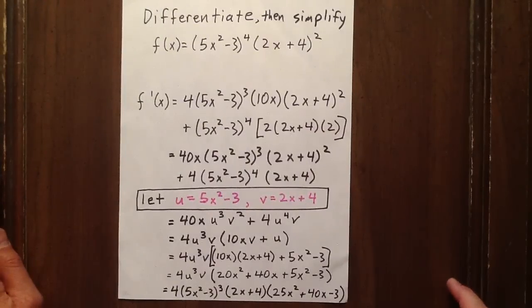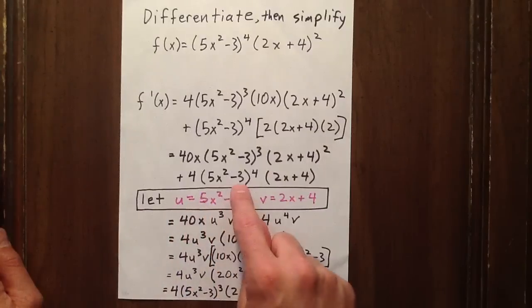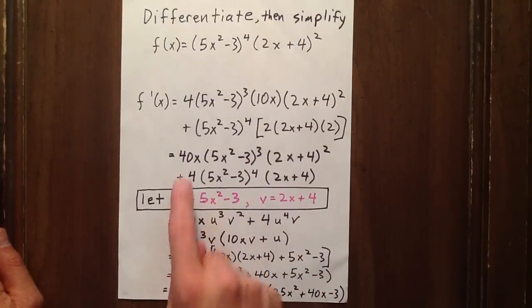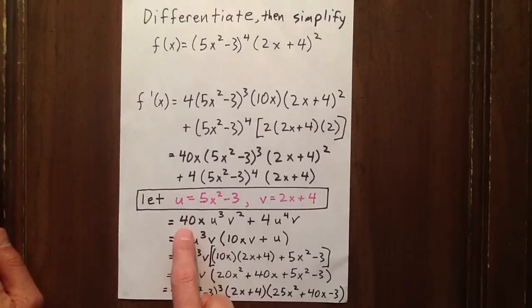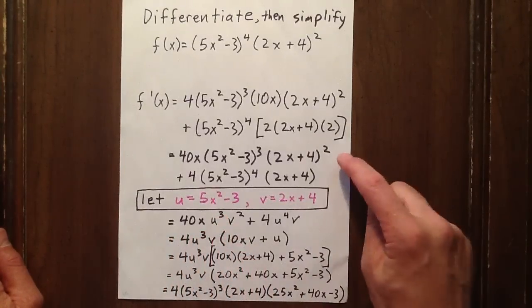Now we see that we have an opportunity for substitution, letting u be 5x squared minus 3 and v be 2x plus 4. We see that the first part can be re-expressed as 40x u cubed v squared, right there.